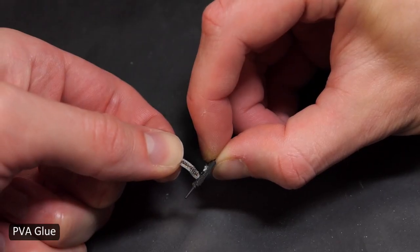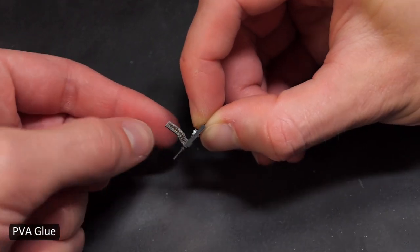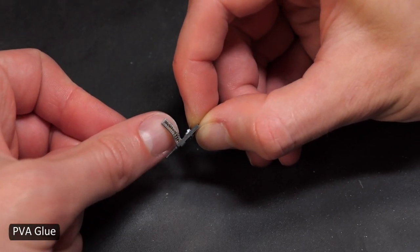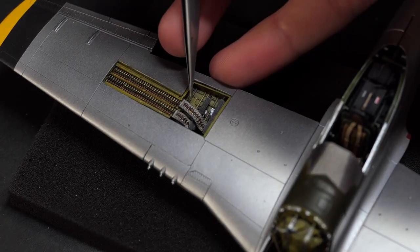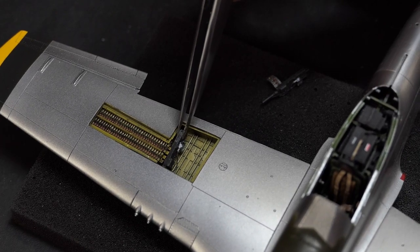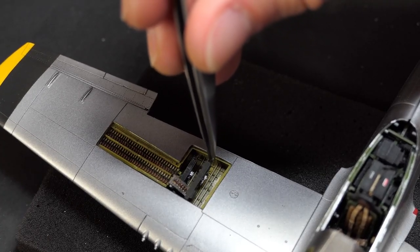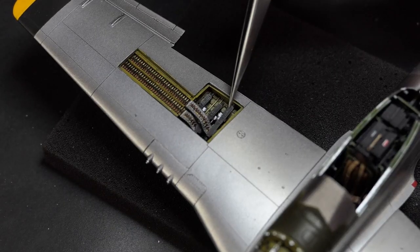I used PVA glue which is the same kind of Elmer's glue that children eat on the ammo belt feed chute because I needed to test fit it inside the gun bay and do some last-minute positioning to get it to the correct angle. I do like super glue but in this situation it would have dried too quickly for my needs.